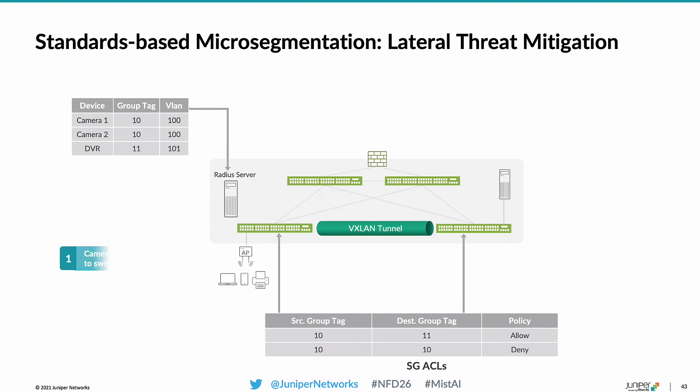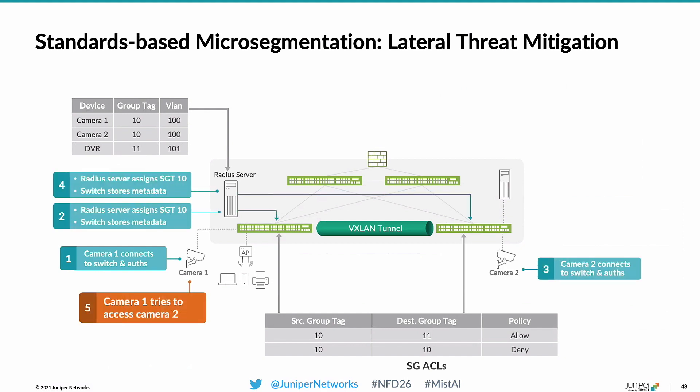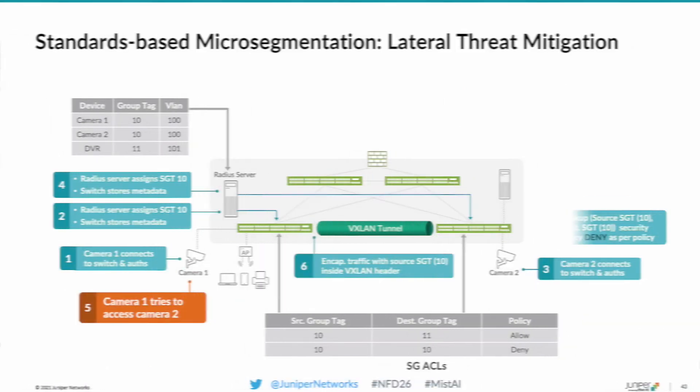We can do this similarly for the same switch or multiple switches, whether devices are connected to the same switch or different switches in the network. That's a quick look at the SGT automation, where we introduce tags with the help of IETF RADIUS attributes and control communication using IP class scenarios and standards-based segmentation.